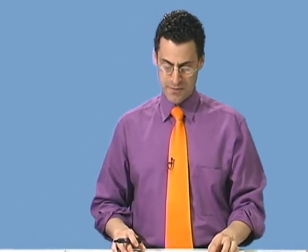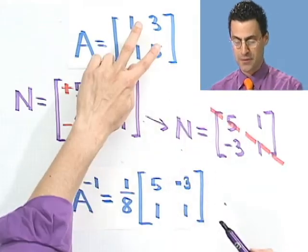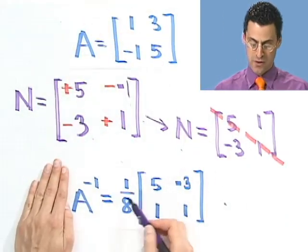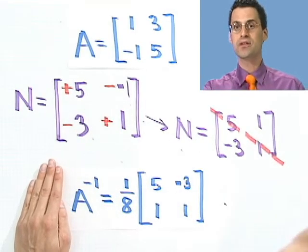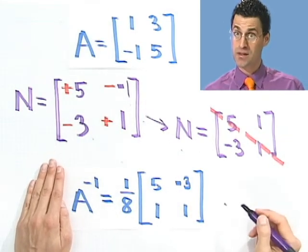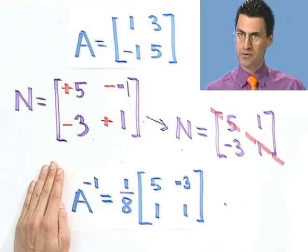This is a very strange way of finding the inverse here, because we already know that an easier way is just to do the thing I told you, to flip these two things and put negative signs there, and then 1 over the determinant. It turns out, though, that this weird way actually works in every single higher dimension. So the weird way is actually valuable.